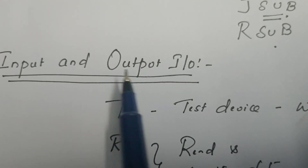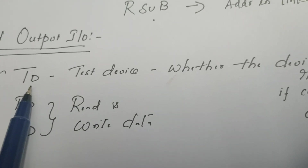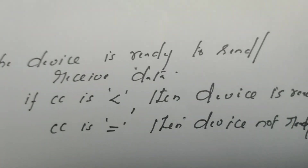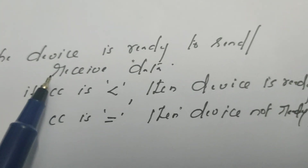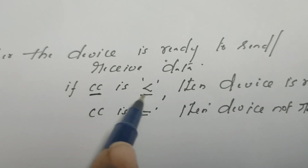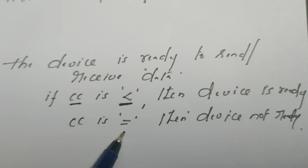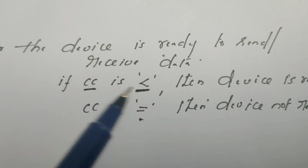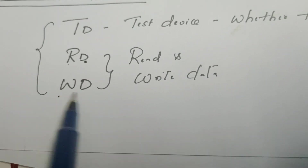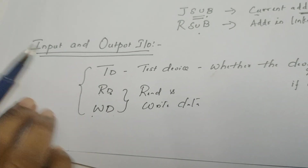For input and output operations there are three instructions. The first is test device, which checks whether the device is ready to send or receive data by checking the condition code — if it is less than, the device is ready; if equal to, the device is not ready. Once the device is ready, read data and write data instructions are used to perform read or write operations.